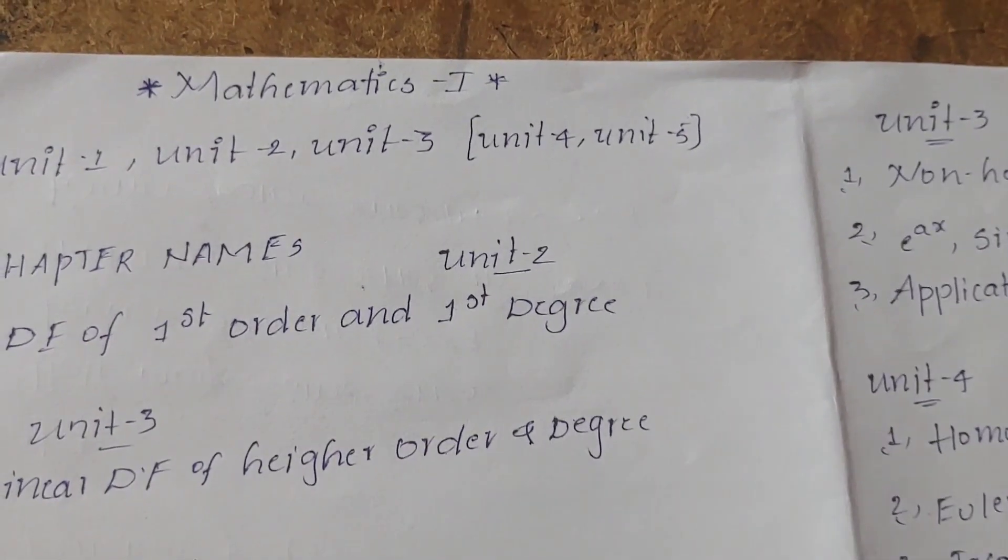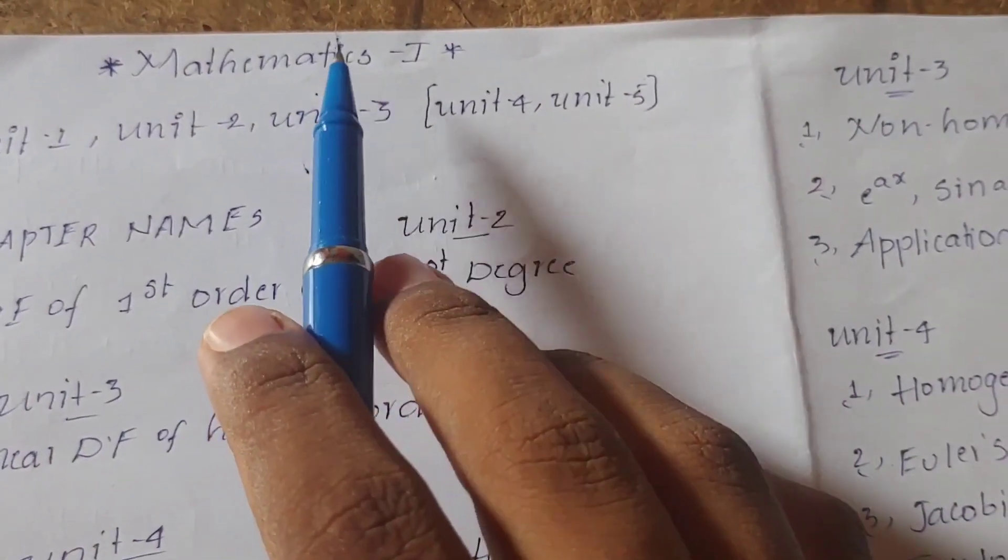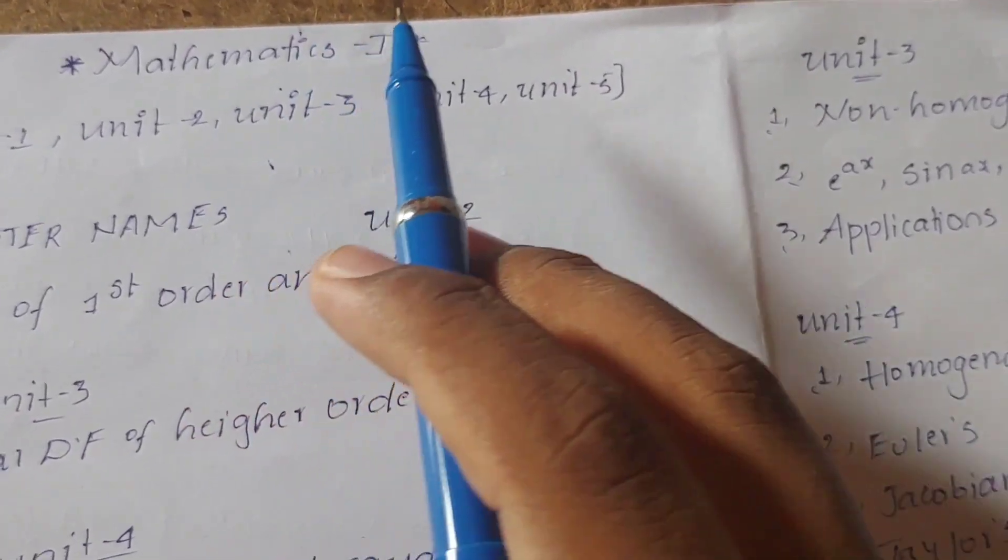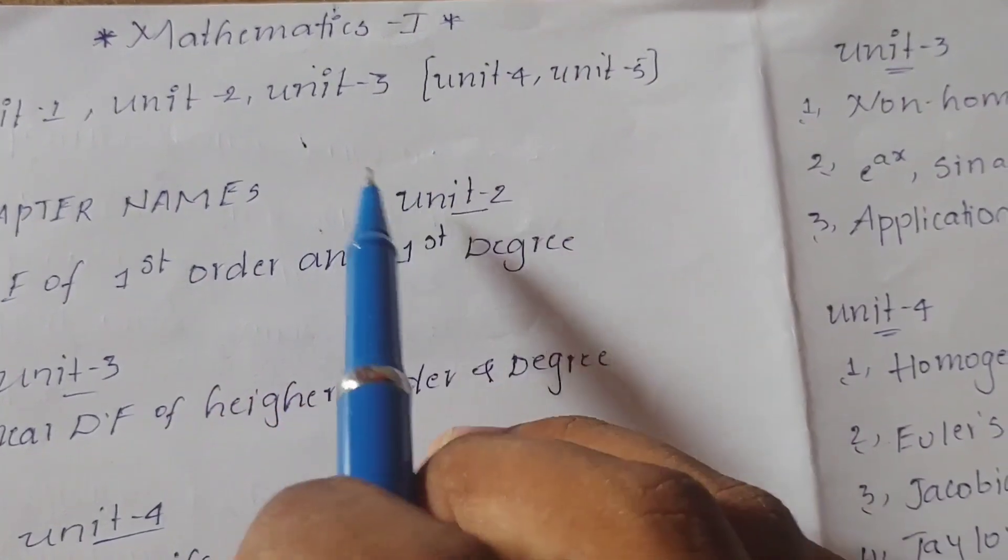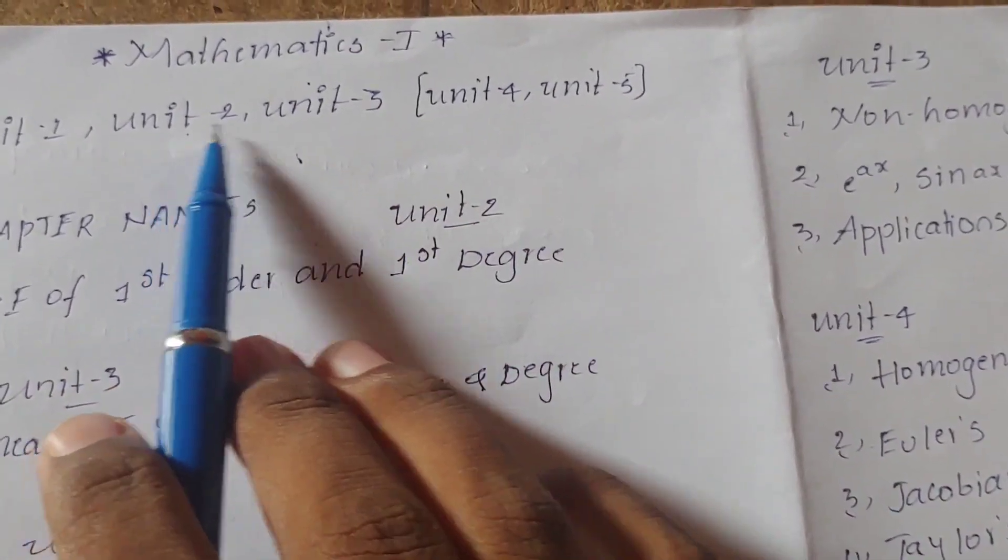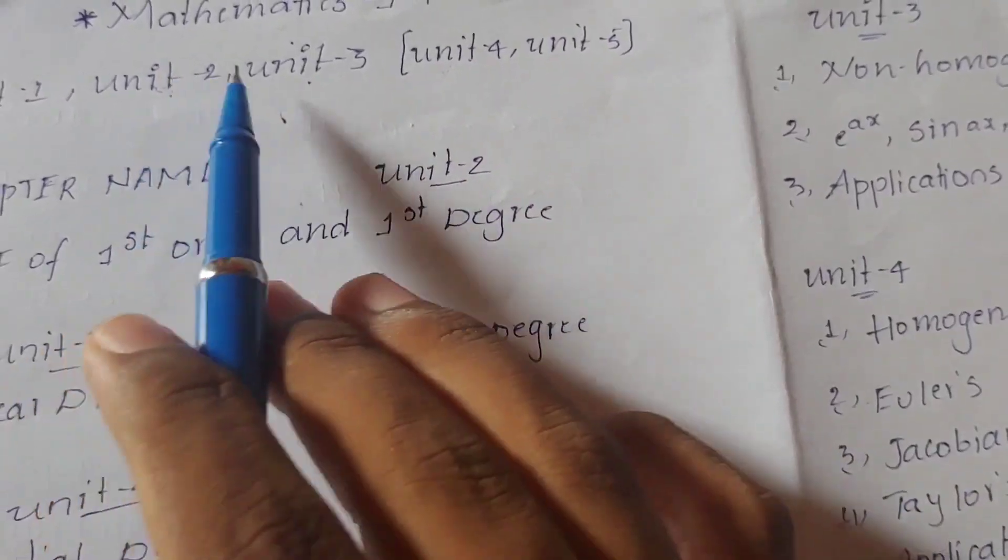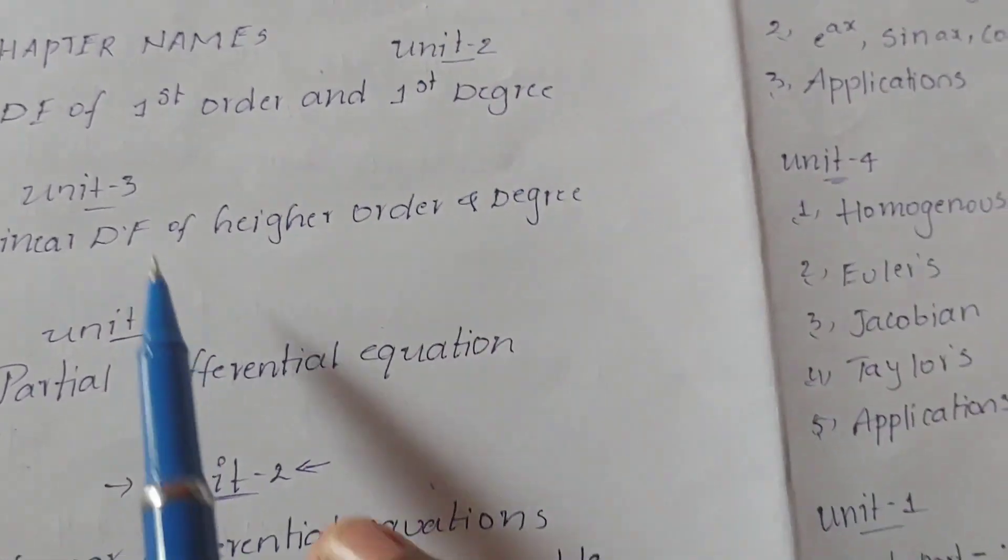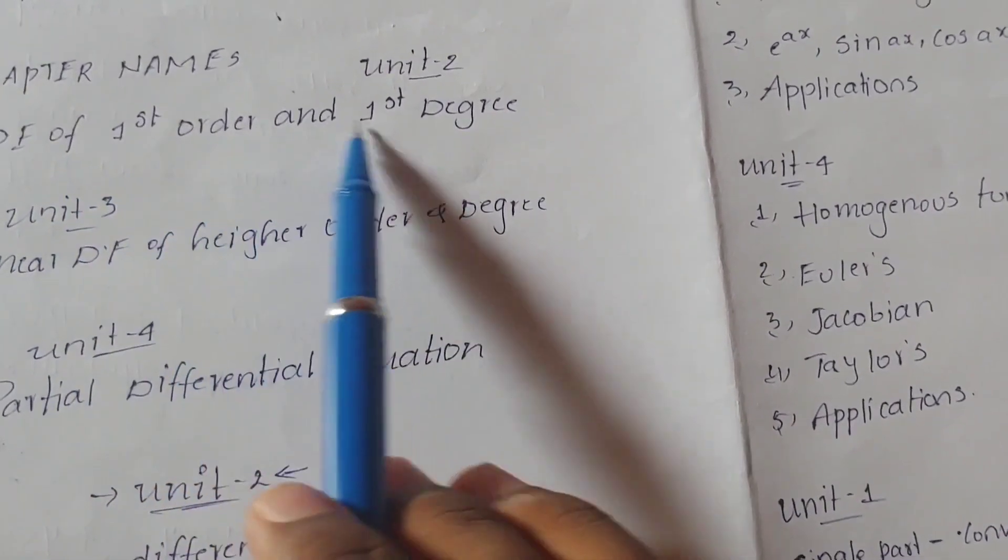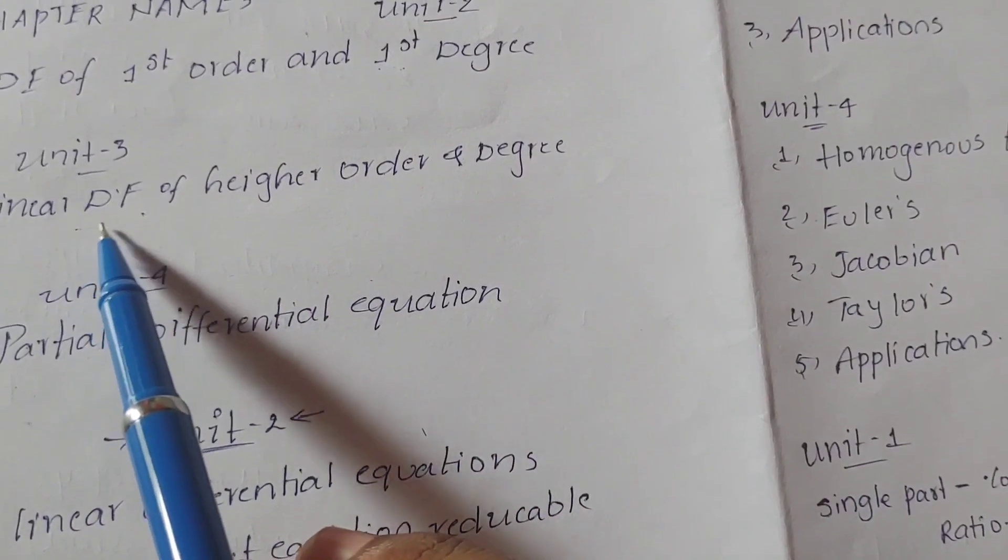If you like the content, then subscribe and press the bell icon. Guys, M1 mathematics R19 regulation, there are five units. Unit 2, Unit 3, Unit 4, each unit we need to discuss. First, Unit 2 uses differential equations of first order and first degree. Linear differential equations, linear differential equations of higher order and higher degree.